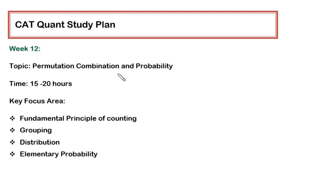Hello guys, so in this video I will be discussing what we have to do in week number 12. In this week we have to focus on two topics: permutation combination and probability. Both are interlinked. Once you are comfortable with permutation combination, then definitely probability is just an extension of the same.